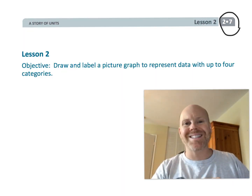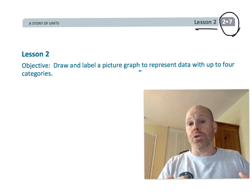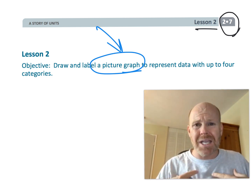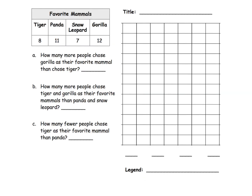This is second grade module 7 lesson 2, and in this lesson we're going to be drawing picture graphs. The real point of this for parents and teachers is to share what a picture graph is. The idea of a picture graph is a way to organize your data, much like a bar graph but with some differences. We have a table here that says 'Favorite Mammals' with four different kinds of mammals, and then some questions we'll answer once we've made our picture graph.